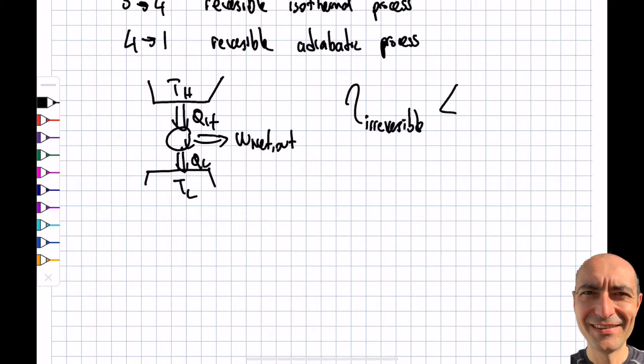What we're saying is the efficiency of the irreversible one will always be less than the efficiency of the reversible one. As I mentioned in the previous segment, this will be the maximum efficiency I can obtain. What if the efficiency of the process turns out to be greater than the reversible? That is impossible.